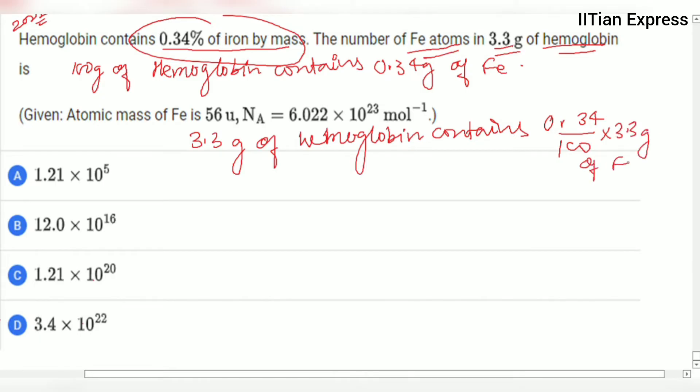From this we are having the weight of iron. From this we can calculate the number of moles of iron. So we can say moles of iron equals 0.34 multiplied by 3.3 divided by 100 multiplied by 56, and that is the molar mass of Fe. This is the weight of iron in 3.3 grams.